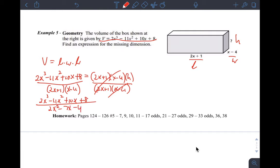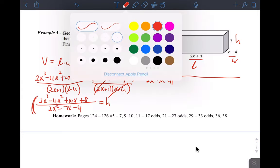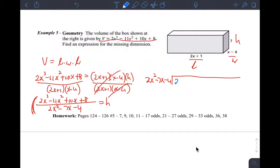And then to solve the question, this equals h. So we just want to do long division. So long division, this way: 2x squared minus 7x minus 4. And then inside, write the dividend: 2x cubed minus 11x squared plus 10x plus 8.